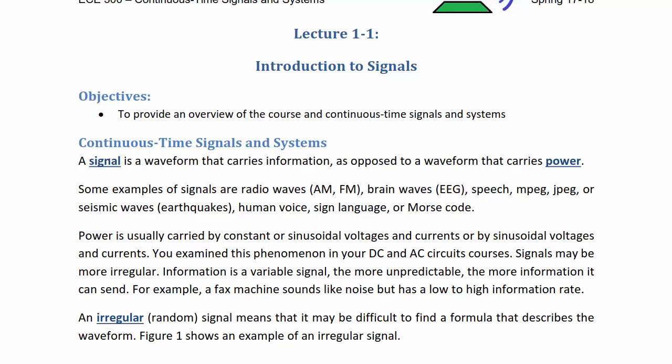A signal is a waveform that carries information, as opposed to a waveform that carries power. Up to this point in your engineering career, you have been studying waveforms that carry power, such as in your circuits courses — a waveform that would carry voltage or current.